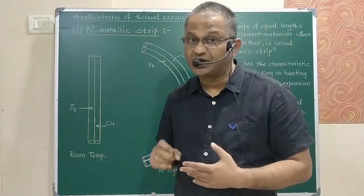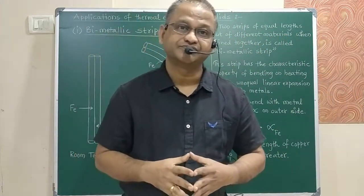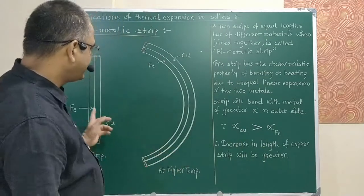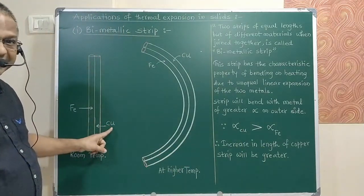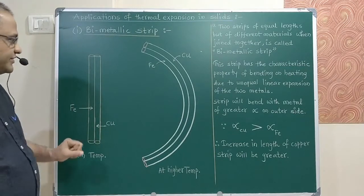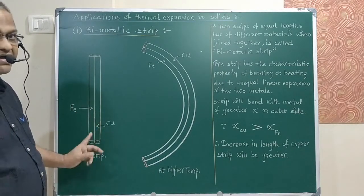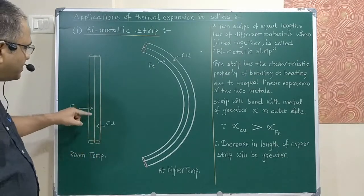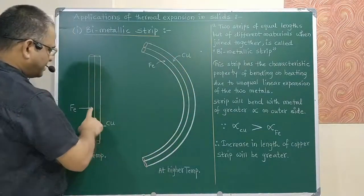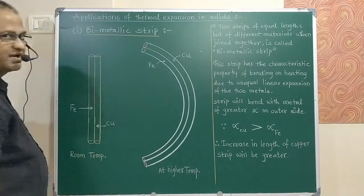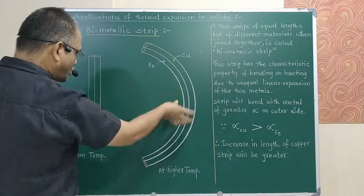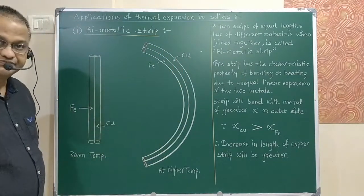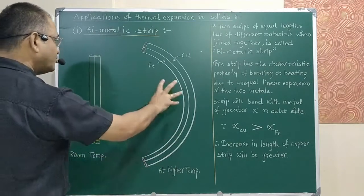The alpha, meaning the coefficient of linear expansion, is different for each metal. The metal with larger alpha will expand more. Between iron and copper, the alpha of copper is greater than that of iron, which means copper will expand more. As a result, the strip will bend, taking a convex shape at high temperature. The strip bends because copper expands more than iron.